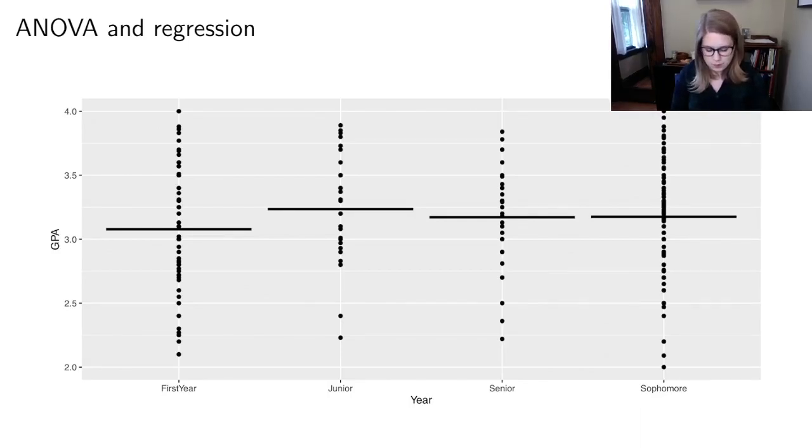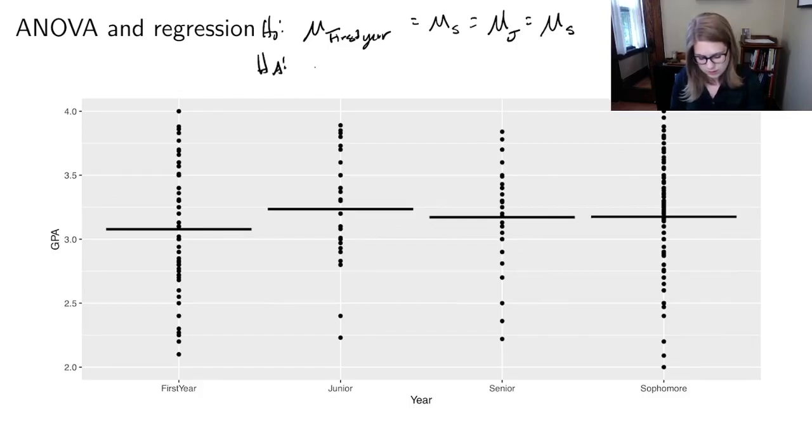And we want to know are the average GPAs different between those groups. And the statistic that we would be comparing are the X bars. So we want to know is mu_first year equal to mu_sophomore equal to mu_junior equal to mu_senior. Or is at least one of the means different.